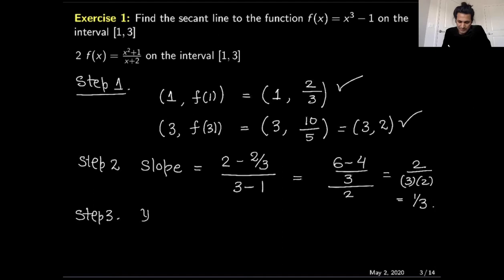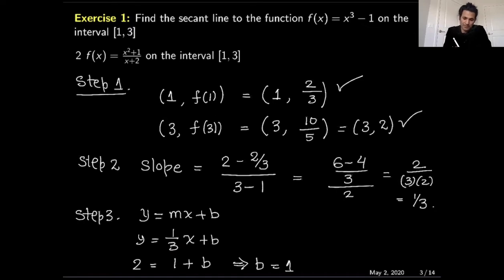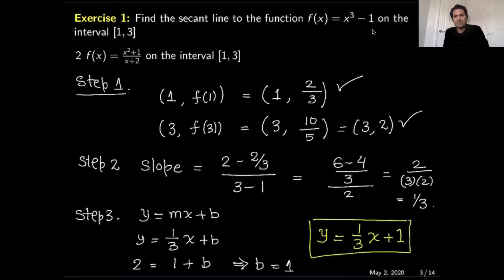So the slope of the secant line is 1/3. In step number three, we calculate the equation of the line: y = (1/3)x + b. I'll pick the second point (3, 2) to find b. Plugging in: 2 = (1/3)(3) + b, so 2 = 1 + b, giving b = 1. The equation of the secant line is y = (1/3)x + 1.